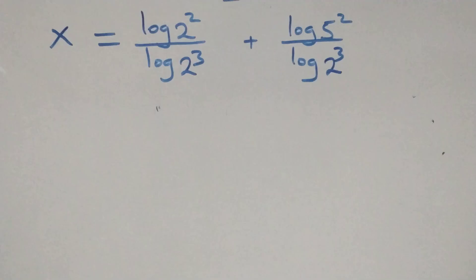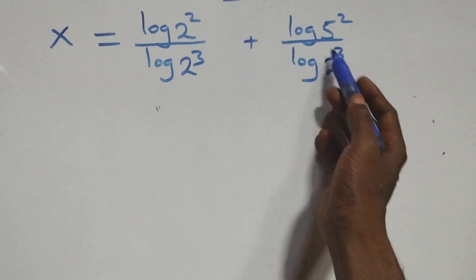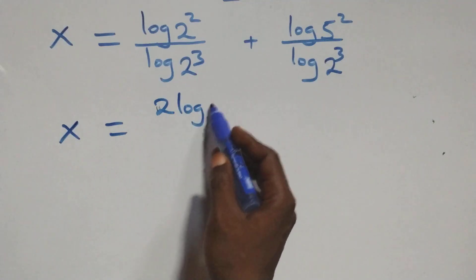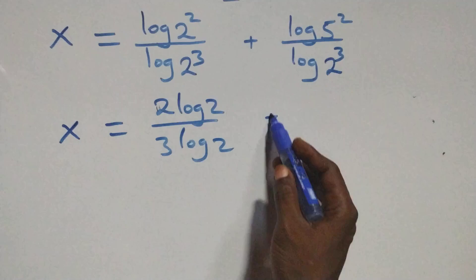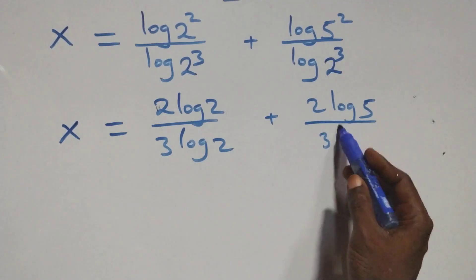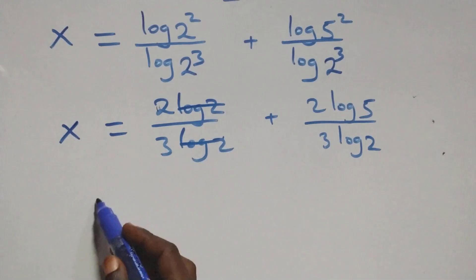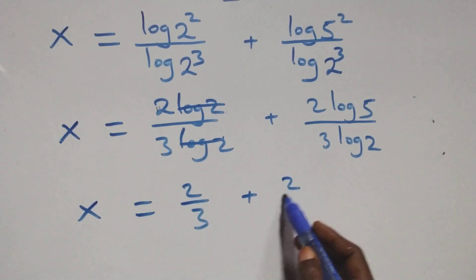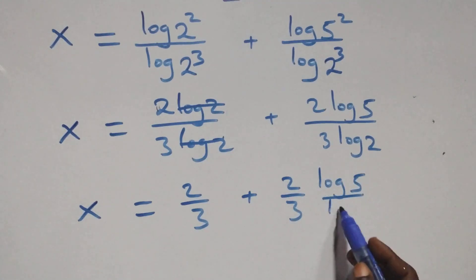Here we apply the power log rule: the 2 comes down here and the 3 comes here. So we have x equals 2 log 2 over 3 log 2 plus 2 log 5 over 3 log 2. This implies log 2 cancels with each other, giving x equals 2 over 3 plus 2 over 3 times log 5 over log 2.